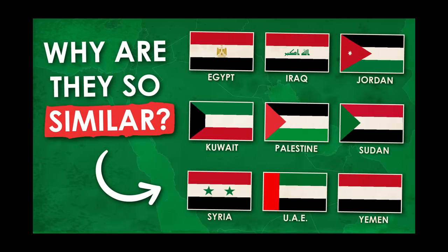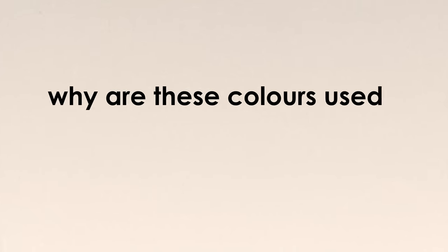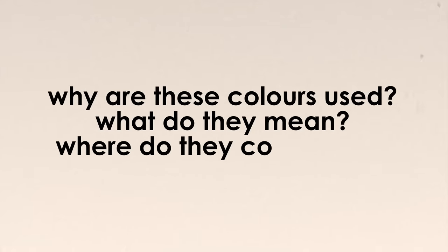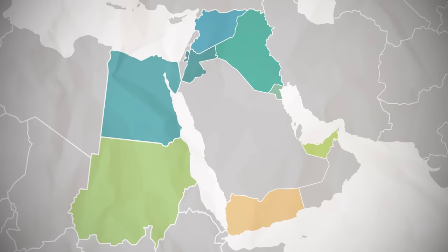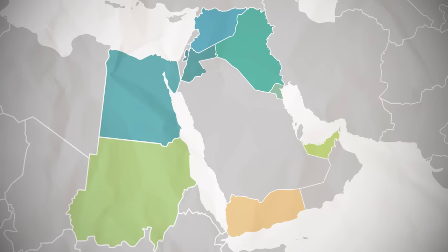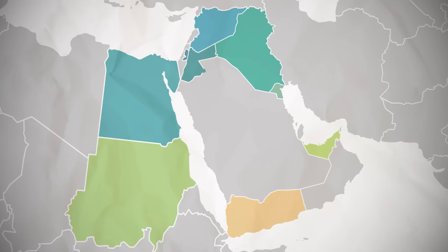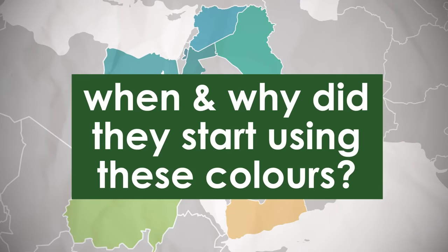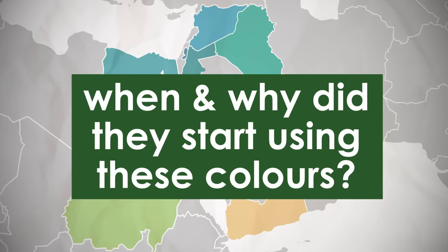But these 9 countries have almost equal flags, all using the pan-Arab colors — so why? In this video, I want to do two things: first, understand why these colors are used, what they mean, and where they come from; and second, go through each of these 9 countries and learn when and why they began to do so.